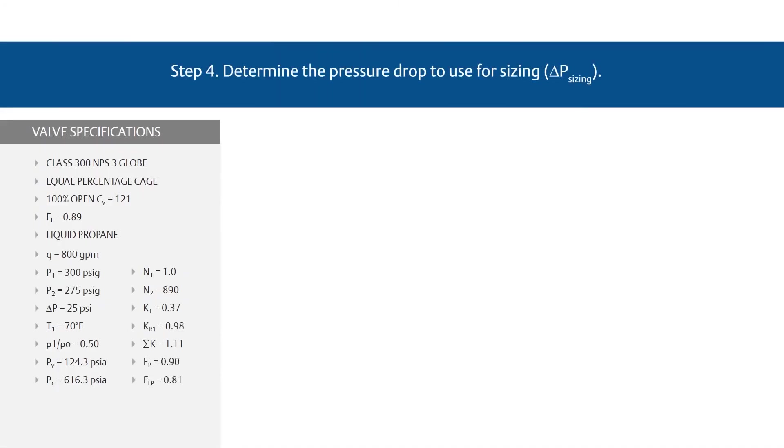Step 4, determine the pressure drop to use for sizing, or delta P sizing. When the difference between the upstream and downstream pressure is high enough, the liquid may start to vaporize, causing choked flow. If the actual pressure drop across the valve, delta P, is higher than the pressure drop that causes choked flow, the choked flow pressure drop, delta P choked, must be used in place of the actual pressure drop. First, find the liquid critical pressure ratio factor. Use the F sub F equation. Plug in your variables for a result of 0.83.